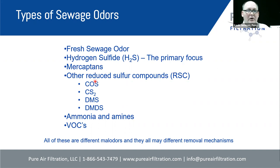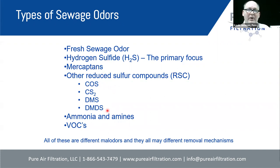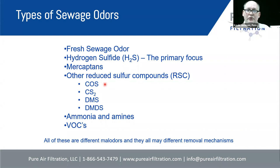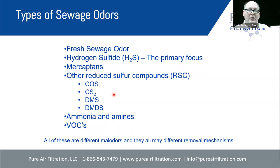Other reduced sulfur compounds include carbonyl sulfide, dimethyl sulfide, and dimethyl disulfide. All of these are typically gases produced or related to hydrogen sulfide, but they're typically sulfur organic compounds with really terrible odor signatures. Dimethyl disulfide, for instance, is the smell of putrid garlic. These compounds are found at very, very low concentrations and are much more difficult to remove than hydrogen sulfide — at lower levels but with really awful smells.